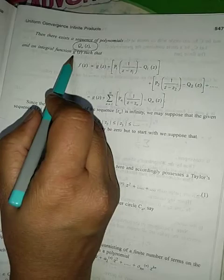Then there exists a sequence of polynomial qₙ(z) and an integral function g(z) such that f(z) can be expressed in this form.